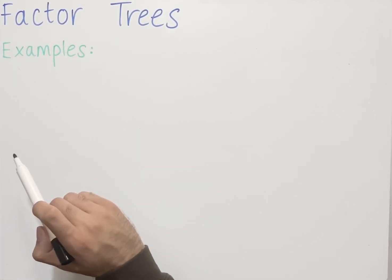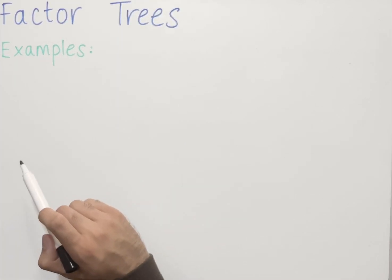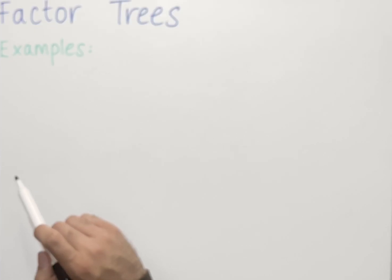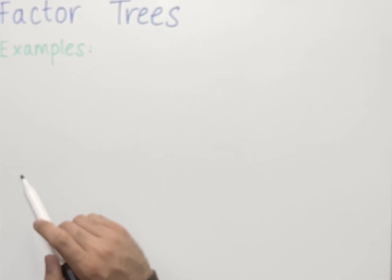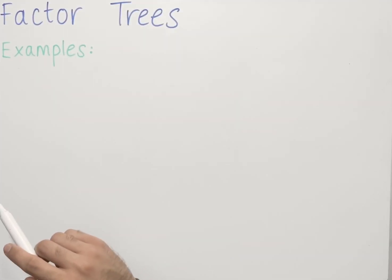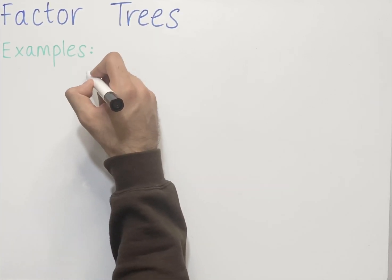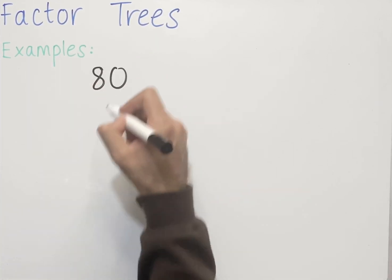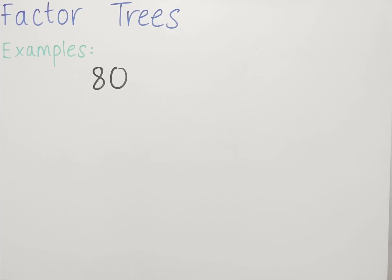Factor trees are useful because they help us break down a number into its prime factors. Let's look at an example of how we can use a factor tree to do that. We look for two numbers that multiply to make the number we have, and then we carry on factorizing the numbers until we're left with prime numbers only.